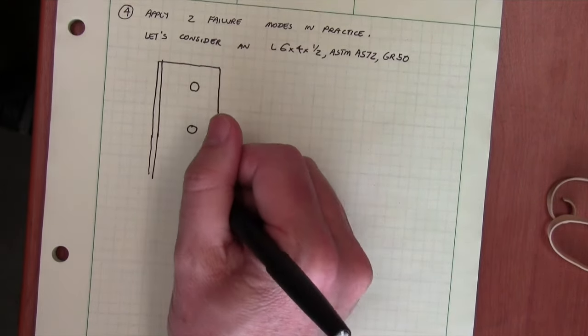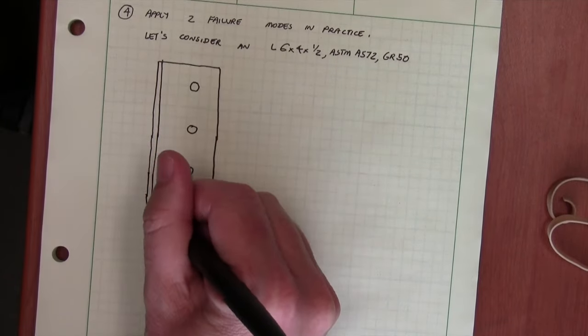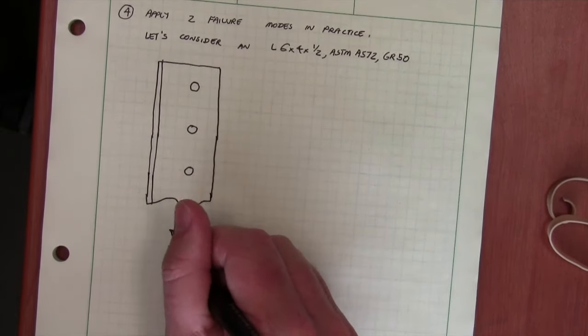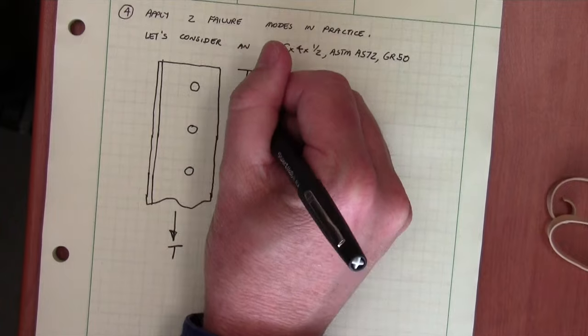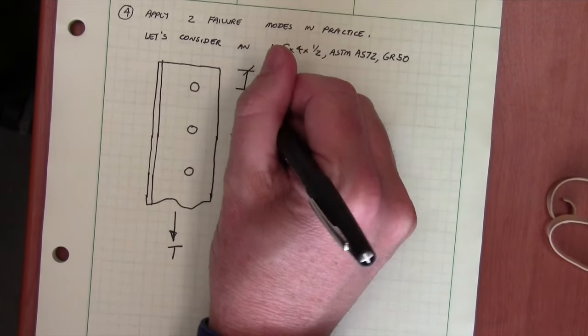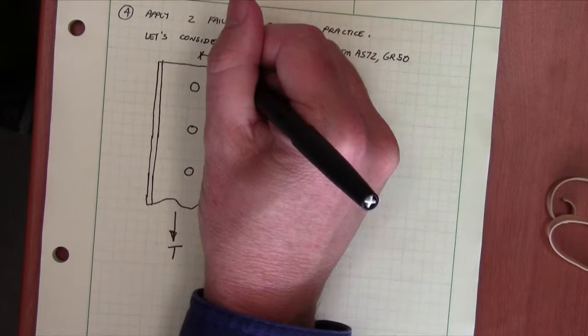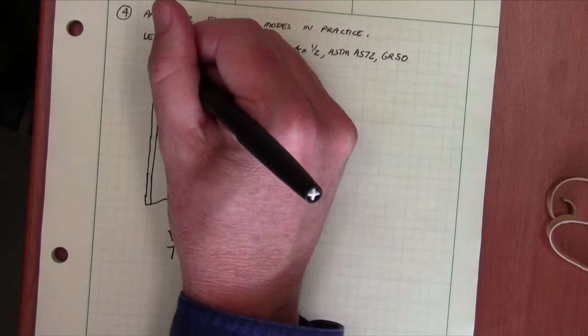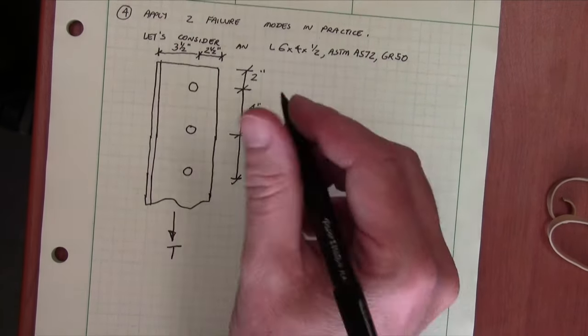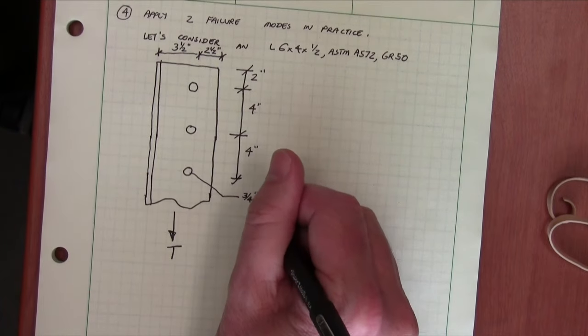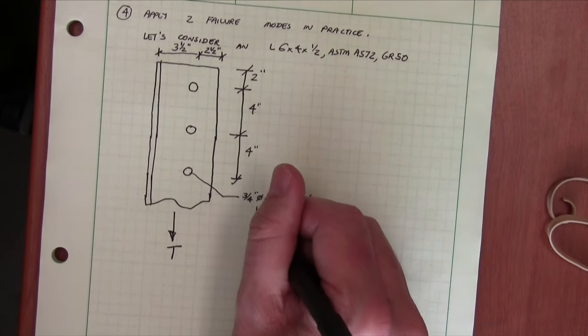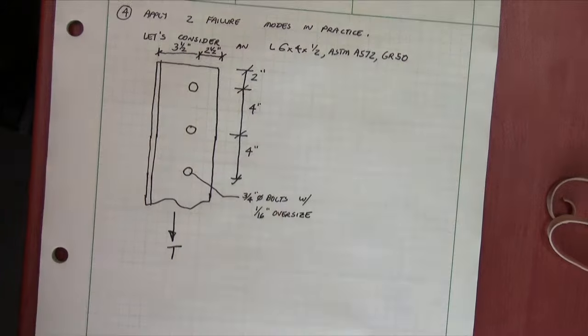We're going to lay out the locations of those holes in both the x and y dimensions. But you can imagine we're looking at a downward view of the angle and the six inch leg of the angle.